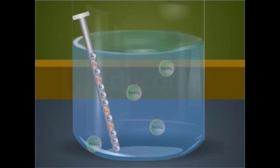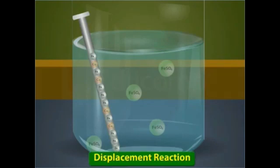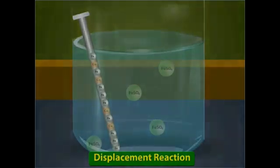The displaced copper then deposits on the iron nail in the form of reddish brown coating. Since in this reaction, more reactive metal iron displaces a less reactive metal copper from its compound, it is a displacement reaction.